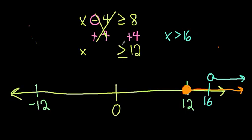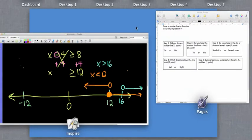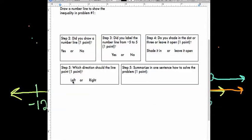If your inequality is less than — like x is less than 12 — there's no equal to under here, so we don't shade it in. And you would draw your arrow to the left. So you just circle which direction you went — left or right. Then you summarize in one sentence how you solved the problem.